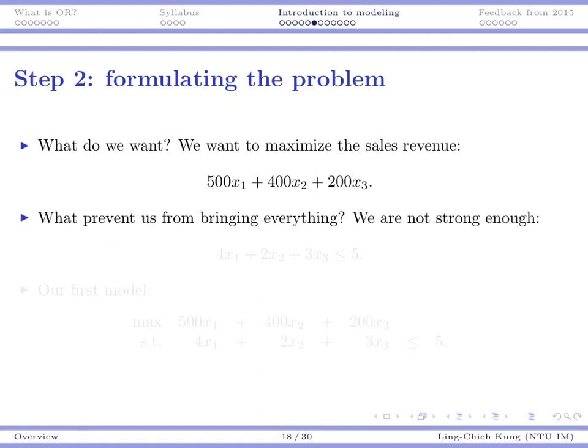What kind of constraints do I have? I am not strong enough. The left-hand side of this inequality is the total amount of weight I carry given my decision. If I carry book 1, I need to put 4 kilograms into my backpack. Book 2 is 2 kilograms. So the constraint is 4x_1 + 2x_2 + 3x_3 ≤ 5. The amount I carry cannot be higher than the amount I can carry.